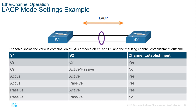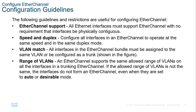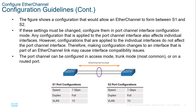How do we configure EtherChannel? We need to follow certain guidelines: all Ethernet interfaces must support EtherChannel, speed and duplex must match, VLANs must match, range of VLANs must match, and modes need to match. For example, if speeds are similar, duplex is similar, and VLANs are similar, this will allow us to actually form an aggregation.